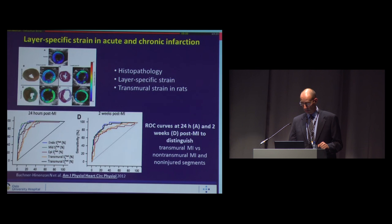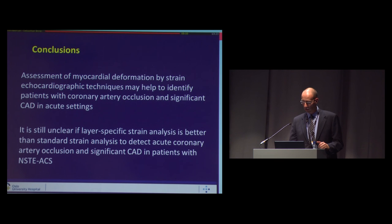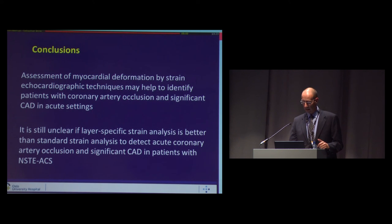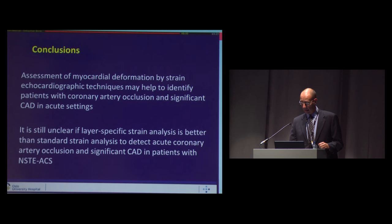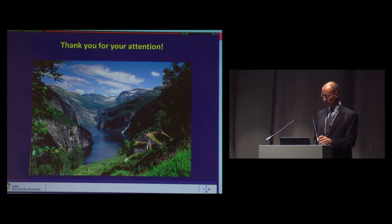In conclusion, assessment of myocardial deformation by strain echocardiographic techniques may help to identify patients with coronary artery occlusion and significant CAD in acute settings. It is still unclear if layer-specific strain analysis is better than standard strain analysis to detect acute coronary artery occlusion and significant CAD in patients with NST-ACS. Thank you for your attention.